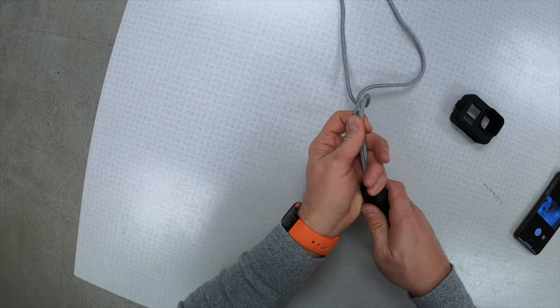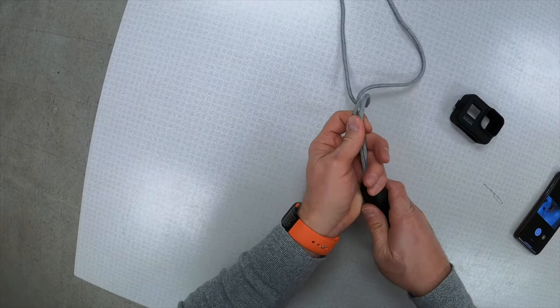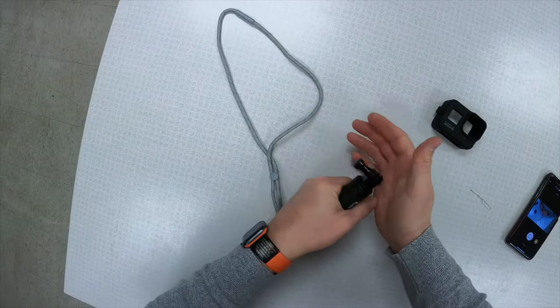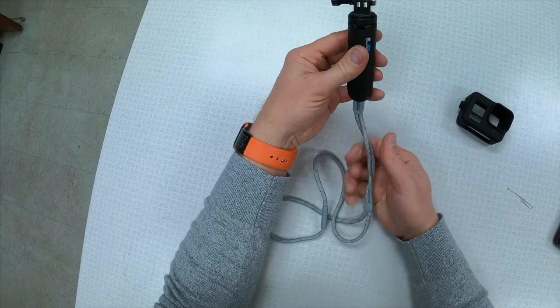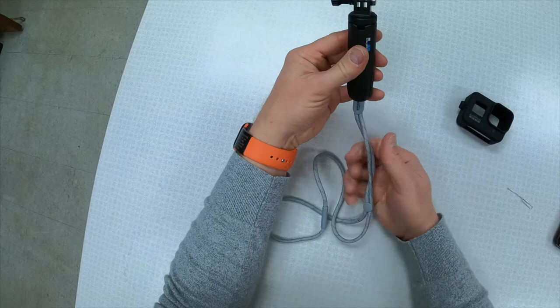And snug it up tight. What you'll see is the handle will close down around it and closes there. Now you've got a lanyard on your handle so you don't drop that, and it also continues to work as a tripod.